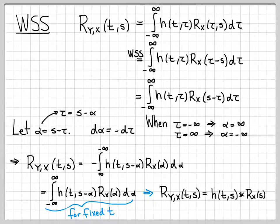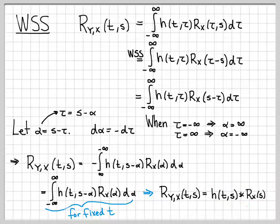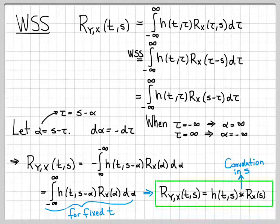So the cross-correlation function for the special case of a wide-sense stationary input can be computed by simply convolving the impulse response with the autocorrelation function for some fixed value of t. If you want to know the cross-correlation for a different t, fix t and do convolution in the s domain. This is a nice compact expression attained by assuming the input random process was wide-sense stationary.